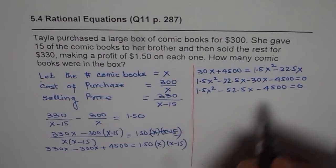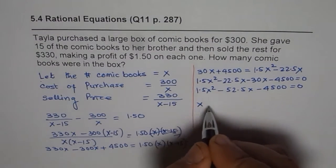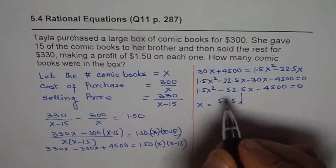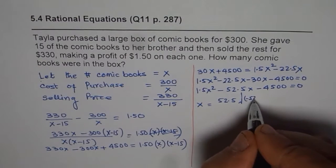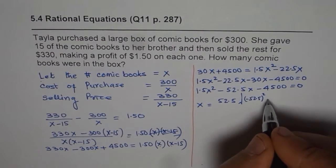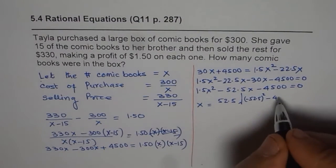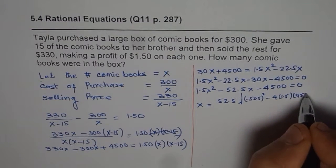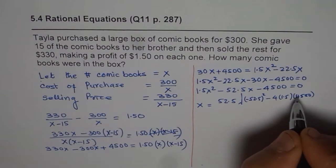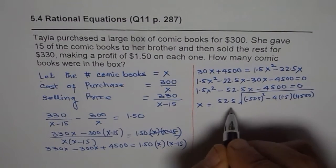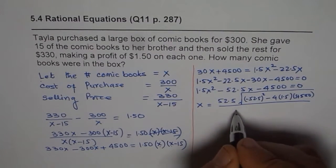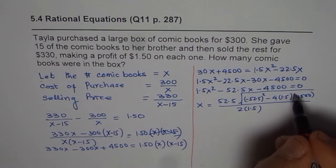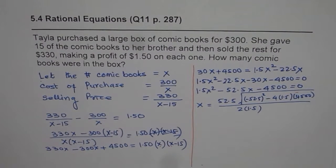Now let's apply the quadratic formula. By now you are an expert in that. Minus 52.5 plus or minus square root of (-52.5)² minus 4 times 1.5 times -4500, divided by 2 times 1.5. There is a negative sign here, so this negative negative will become positive.